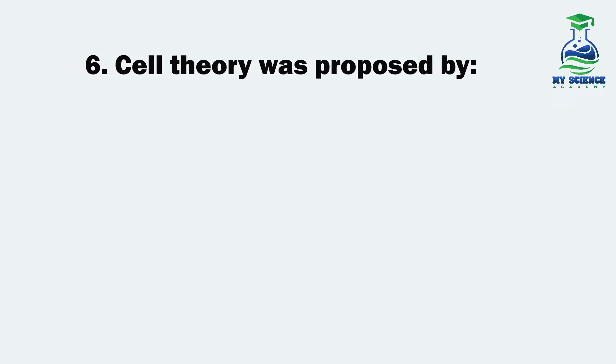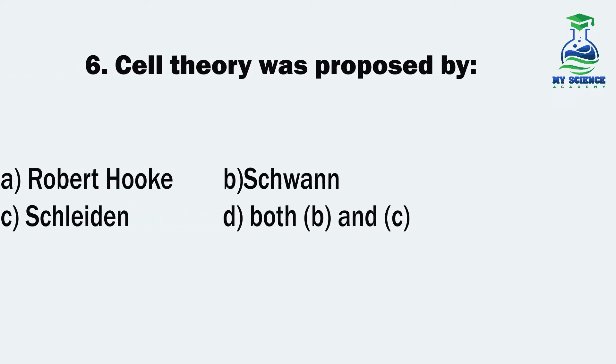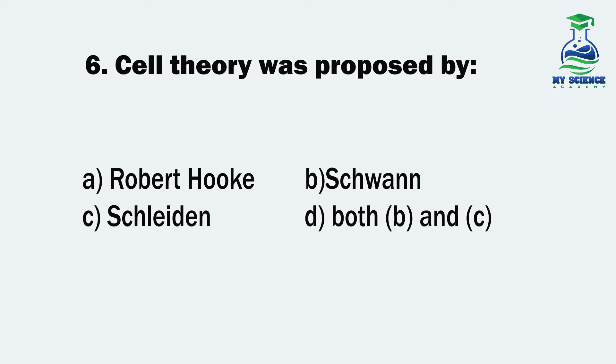Question 6. Cell theory was proposed by: A. Robert Hooke, B. Schwann, C. Schleiden, or D. Both B and C. Let us see the correct option.